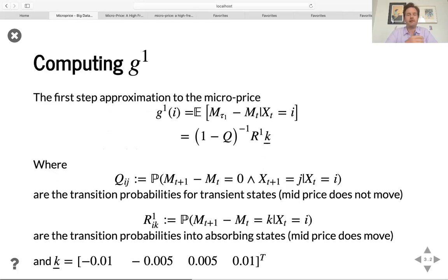And ultimately this computation with the discretized model turns into a simple matrix multiplication which uses matrices Q, which are these transition probabilities for transient states in the order book. So what we mean by transient states is states where the mid price does not move, but potentially the imbalance and the spread could change. And the matrix R1, which captures the absorbing states. So those are the times that the mid price does move. And when it does move, it does move in these four different ways.